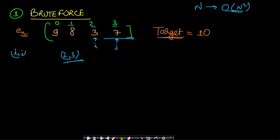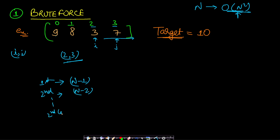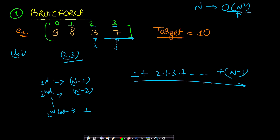The time complexity of the brute force is O(n²). For the first element there are approximately n−1 pairs, for the second n−2, and so on. Summing 1+2+3+...+(n−1) gives n(n−1)/2, which is O(n²).